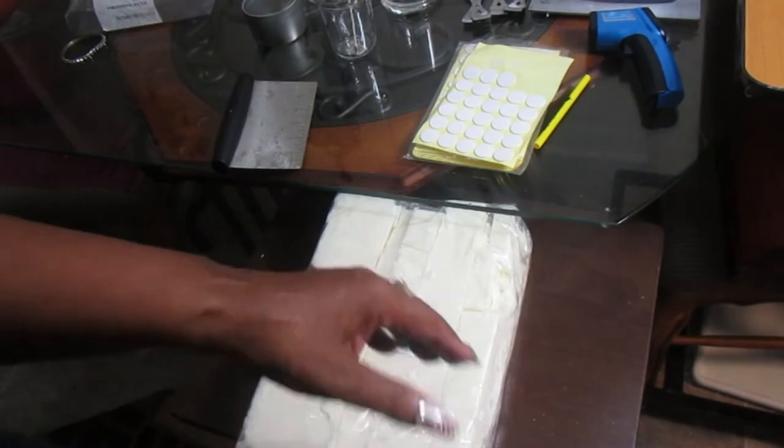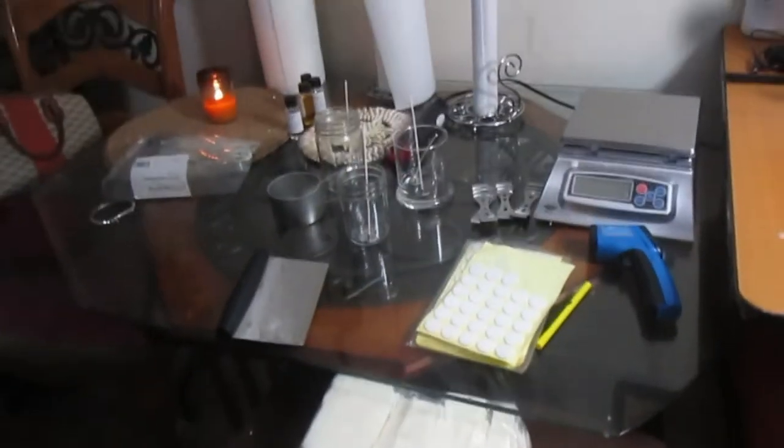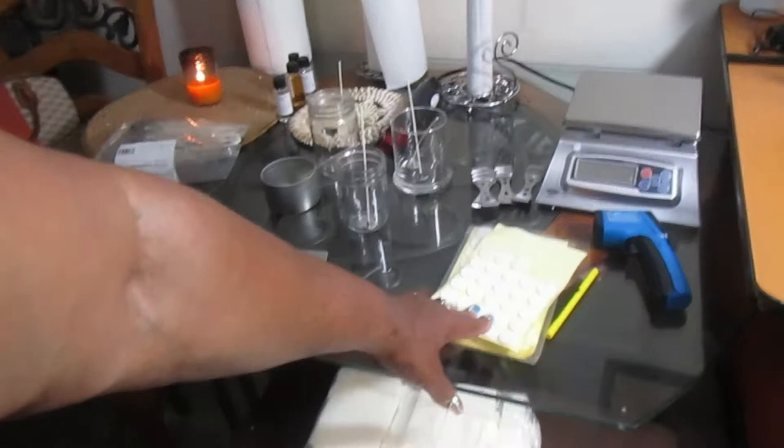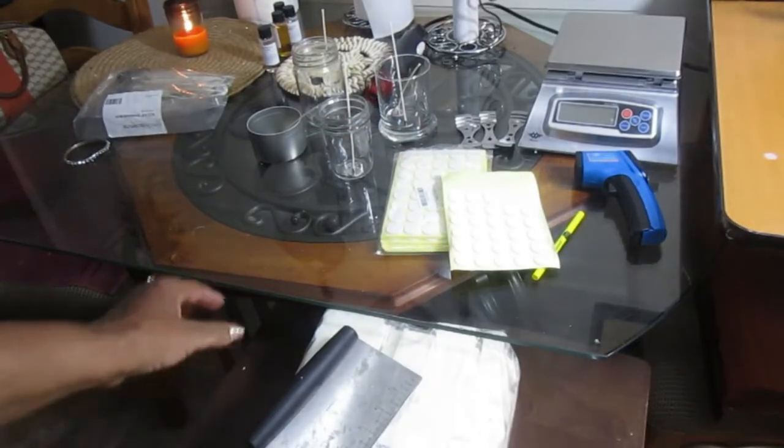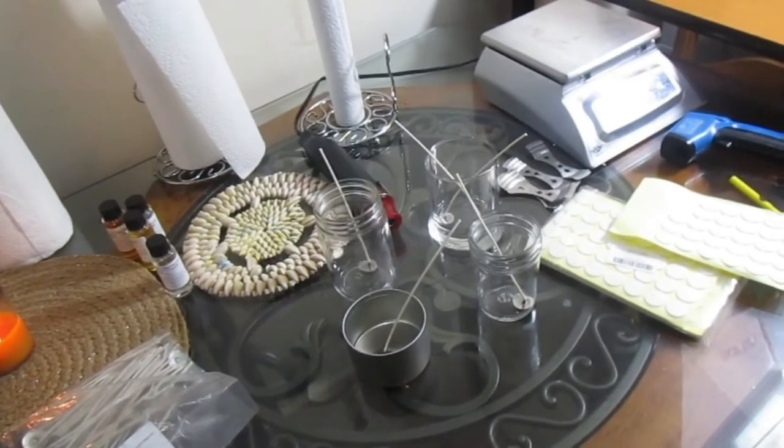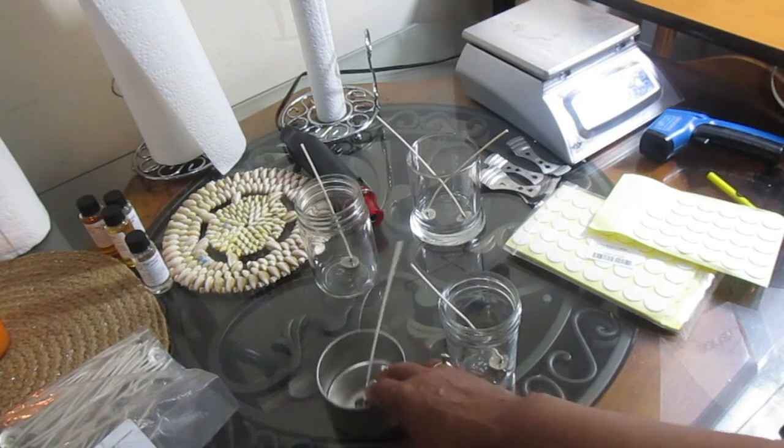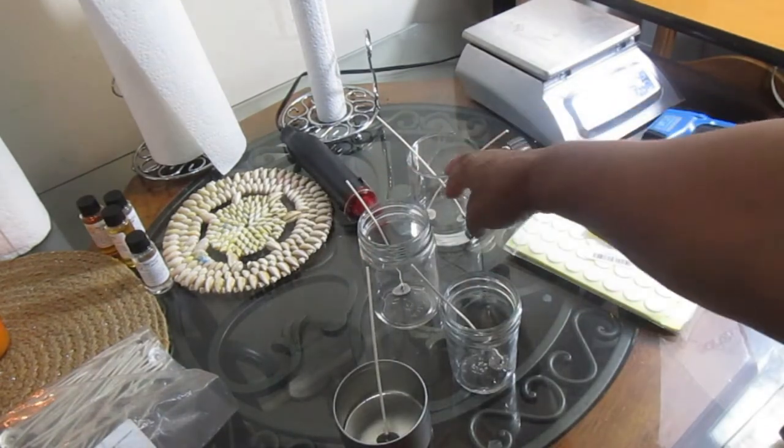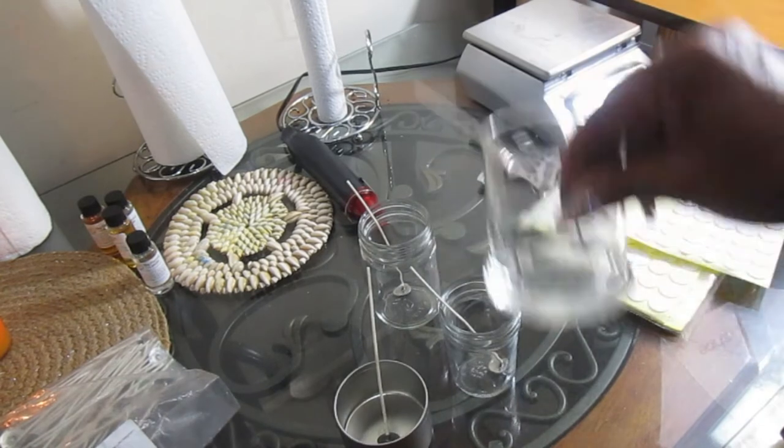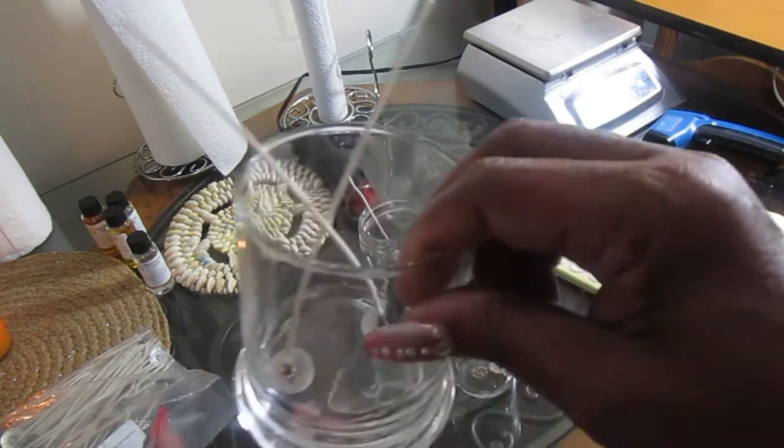Here I have my wick stickers. I did some prepping already. This is to cut my wax with. These are my jars: my 8 ounce jar, my 8 ounce candle, my 12 ounce candles. I'm going to be double wicking this particular jar.